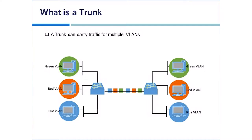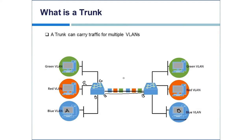For every access port in a VLAN, traffic coming in can only go out of ports in the same VLAN. If I have a device in the blue VLAN on one switch and another device in the blue VLAN on a different switch, I need an interface in that blue VLAN on each switch to carry that traffic. With multiple VLANs — red, green, and blue — I'd need multiple connections, one for each VLAN, which wastes ports. The solution is what we call a trunk.